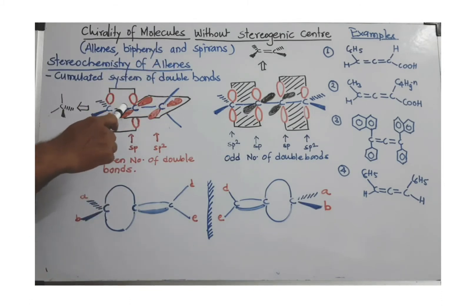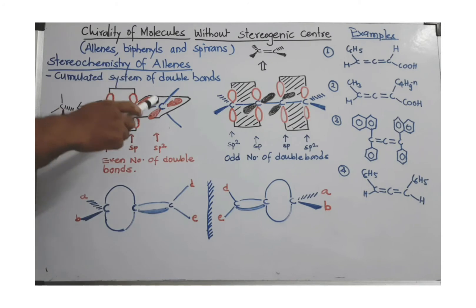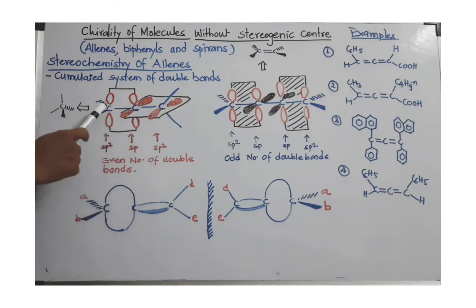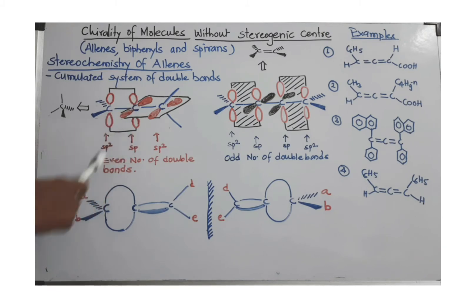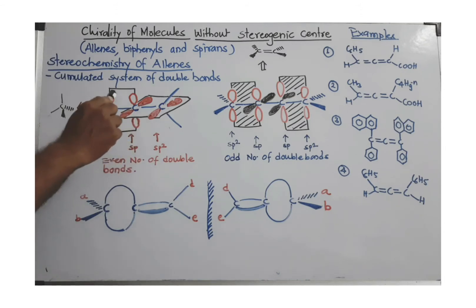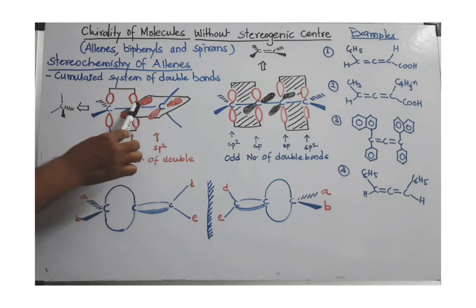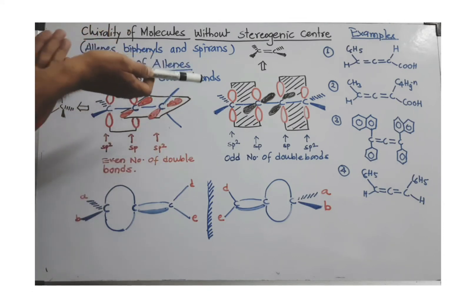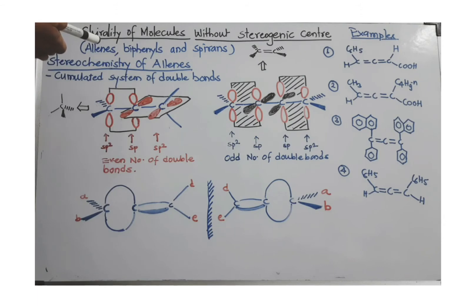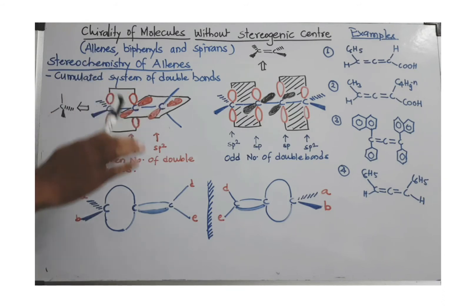In an allene where an even number of double bonds is present, the terminal carbons are sp2 hybridized, meaning the geometry is trigonal planar, and the middle carbon is sp hybridized, which is linear. Looking at the pi system, one pi bond is present in one plane, and the other pi bond between the adjacent carbons is present in a perpendicular plane. Whatever groups are attached at the terminal carbons are therefore not all in one plane.